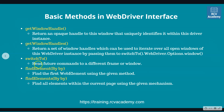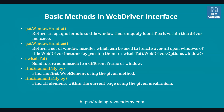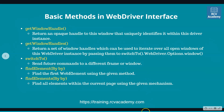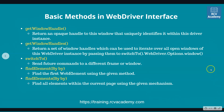switchTo is basically utilized to switch between windows or frames. Once you get the window handle, you know the unique handles for all open windows and you can switch among them using the switchTo method. Let's go ahead and understand this in code.